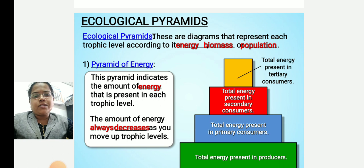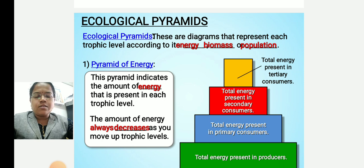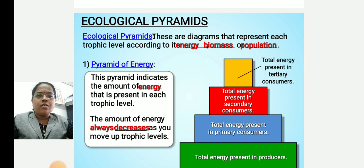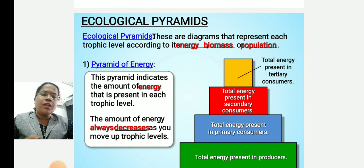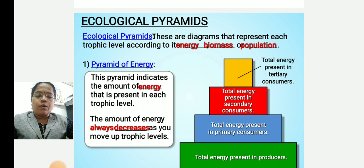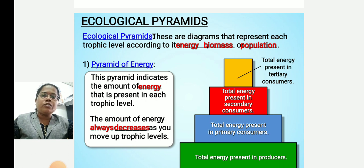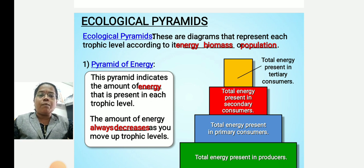Now, what are trophic levels? In the earlier lecture we studied about the food chain, and we know that each food chain has different trophic levels. Trophic levels are the levels from which energy transfers from one trophic level to another — for example, primary consumer, secondary consumer, tertiary consumers, and the producer. Within a food chain, energy transfers from the producer towards the primary consumer, then to the secondary consumer, and then to the tertiary consumer. These are the different trophic levels within the food chain.